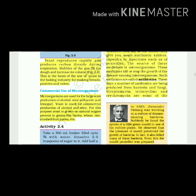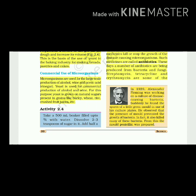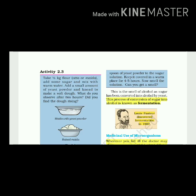Microorganisms are used for large-scale production of alcohol, wine and acetic acid (vinegar). Yeast is used for commercial production of alcohol and wine. For this purpose, yeast is grown on natural sugars present in grains like barley, wheat, rice, and crushed fruit juices. Take a 500 ml beaker, fill up to 3/4 with water, dissolve 2-3 teaspoons of sugar in it, and add half a spoon of yeast powder. Keep it covered in a warm place for 4 to 5 hours. Now smell the solution - this is the smell of alcohol, as sugar has been converted into alcohol by yeast.